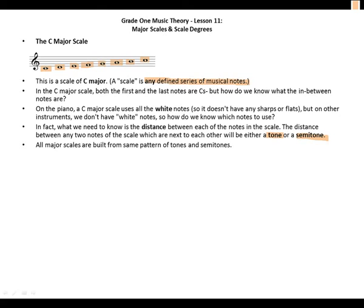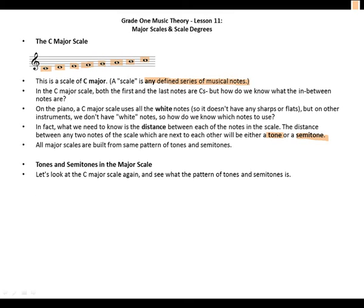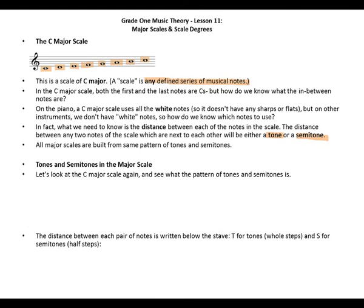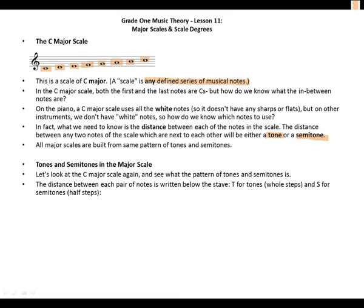All major scales are built from the same pattern of tones and semitones. Let's look at the C major scale again and see what the pattern of tones and semitones is. The distance between each pair of notes is written below the staff: T for tones or whole steps, and S for semitones or half steps.